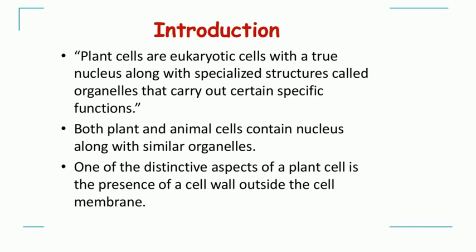Plant cell is basically one example of a eukaryotic cell, which has the presence of a true nucleus, and there are membrane-bound organelles present inside. Both plant and animal cells contain the nucleus and similar organelles. However, there are some differences. One major difference is the presence of the cell wall, which is present in the plant cell but absent in the animal cell. The cell wall is the outermost layer which covers the plasma membrane, and in plants it acts as a protective layer.